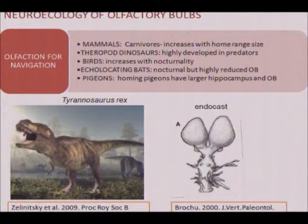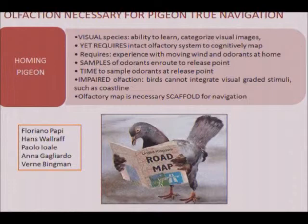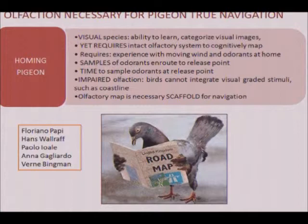Homing pigeons have a larger hippocampus and a larger olfactory bulb than other pigeon strains. There's a huge amount of work by Floriano Papi, Wallraff, and colleagues showing that the necessary condition for a pigeon to show true cognitive mapping is to have olfactory information. If any part of the olfactory system is compromised, they are impaired in their navigation. You can actually lesion the magnetic trigeminal nerve versus the olfactory nerve — and the scaffold for navigation in the homing pigeon is olfaction, despite the fact that birds are incredibly visual species.